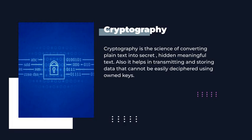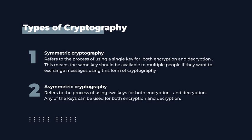When we talk about types of cryptography, there are two types: symmetric cryptography and asymmetric cryptography. Symmetric cryptography refers to the process of using a single key for both encryption and decryption. This means that the same key should be available to multiple people if they want to exchange messages using this form of cryptography.